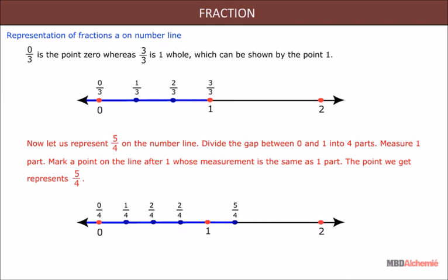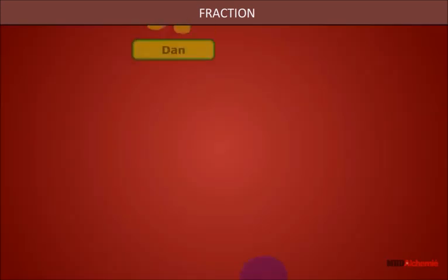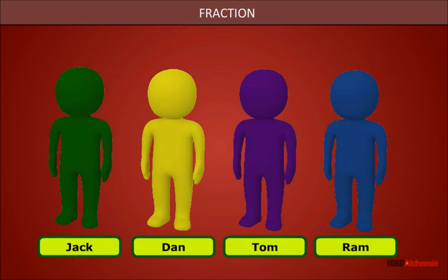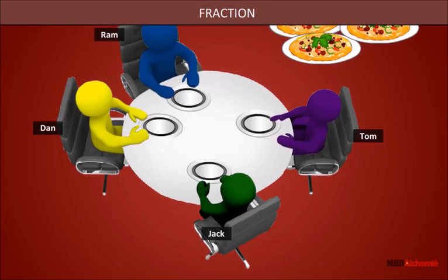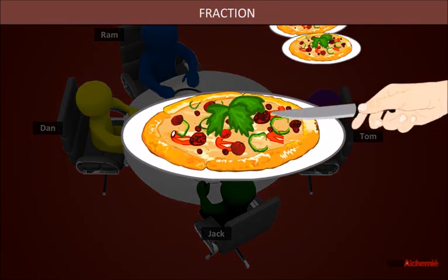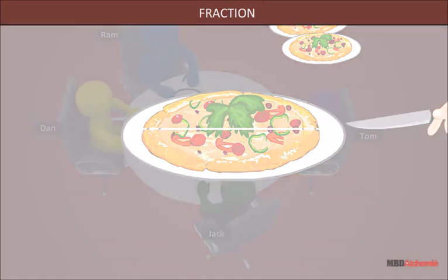Four friends—Jack, Dan, Tom, and Ram—are feeling very hungry. They have three pizzas to eat. They want to divide the pizzas such that each of them gets equal amount of pizza. To achieve this goal, they decide to divide each of the three pizzas into four equal slices.